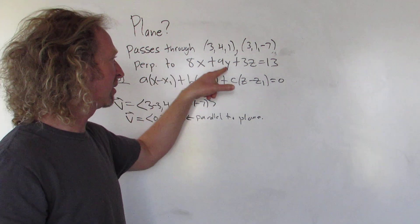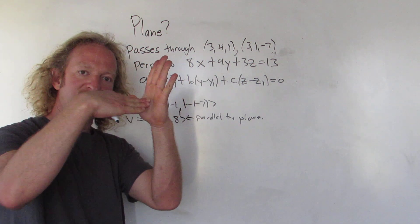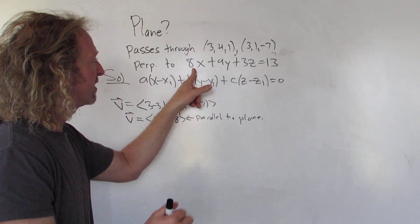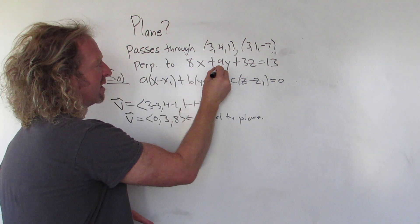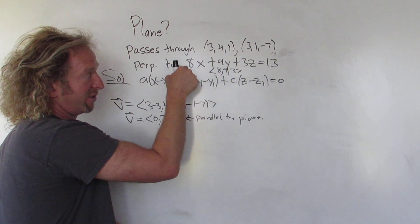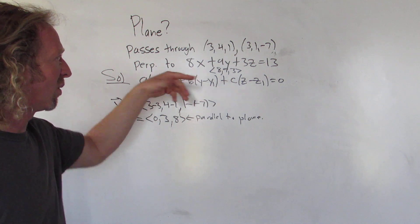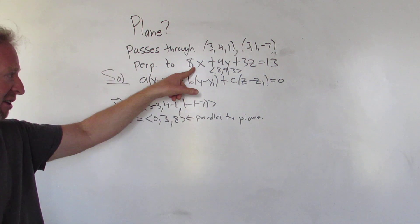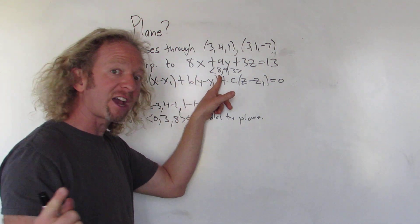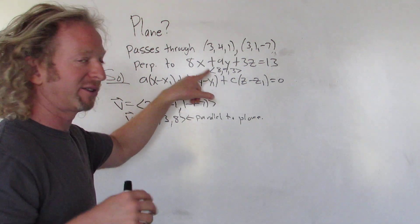Now we're told that our plane is perpendicular to this plane. So we have to think about that, right? So our plane is perpendicular to this plane. This vector here, 8, 9, 3, this is the normal vector for this plane, right? This vector is perpendicular to this plane. So our plane is perpendicular to this plane. This vector is perpendicular to this plane. Therefore, our plane is parallel to this vector.